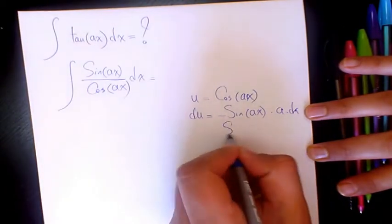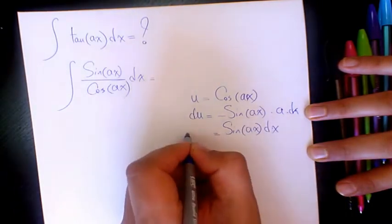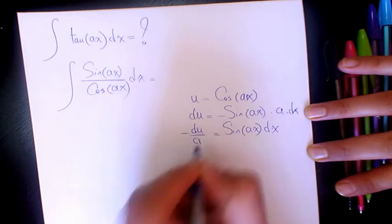So sine ax times dx will be equal to negative du over a.